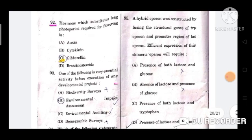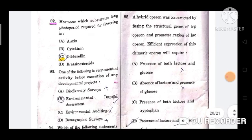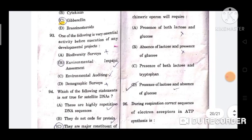Question number 95: A hybrid operon was constructed by fusing the structural genes of trp operon and promoter region of lac operon. Efficient expression of this chimeric operon will require? The correct option is option D, presence of lactose and absence of glucose.